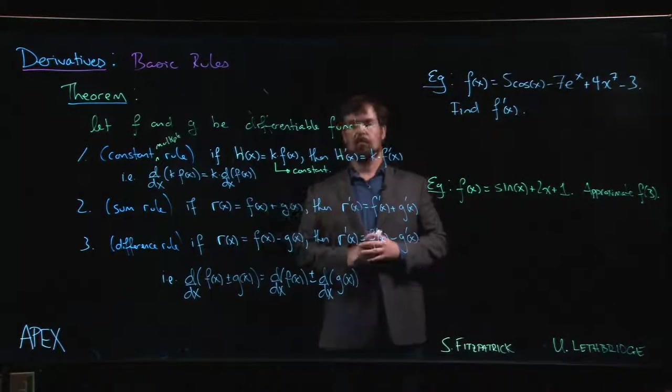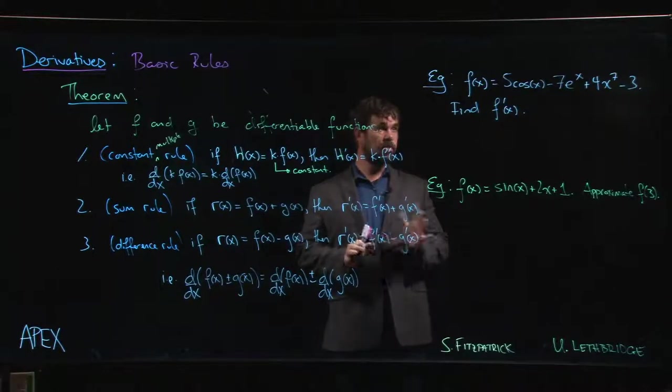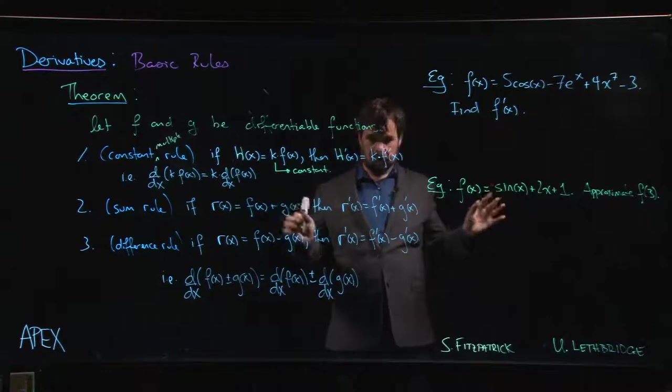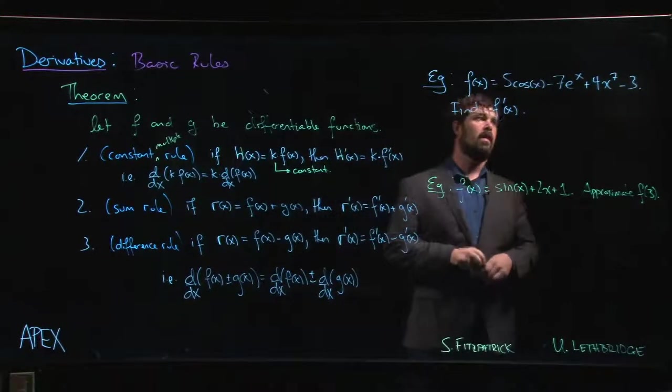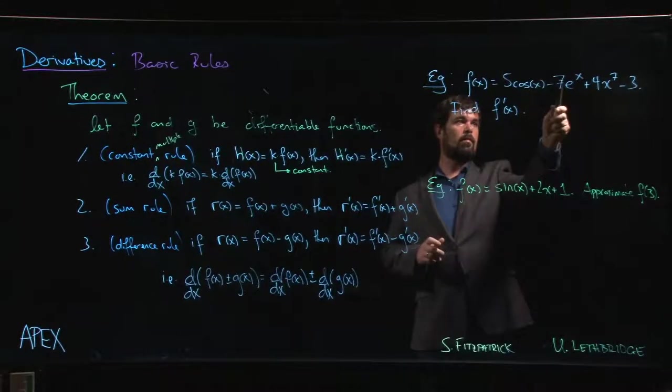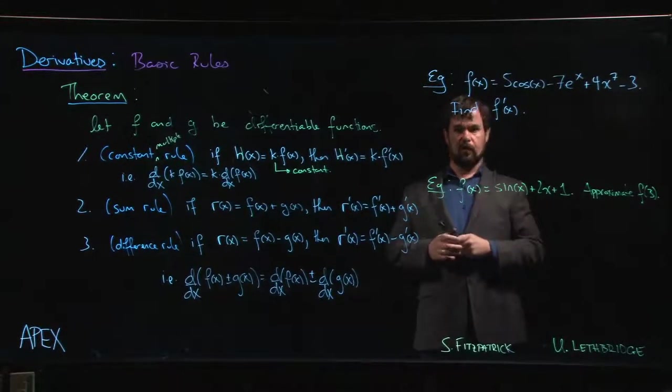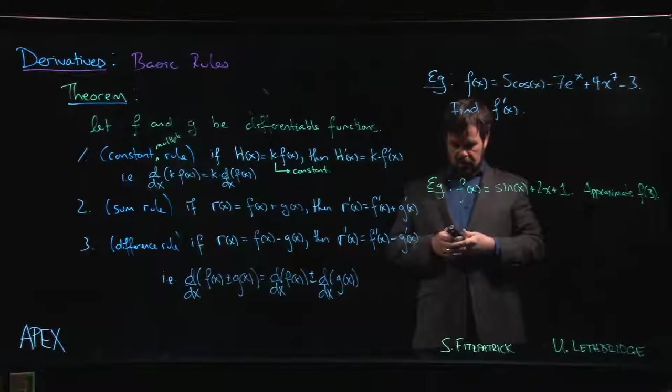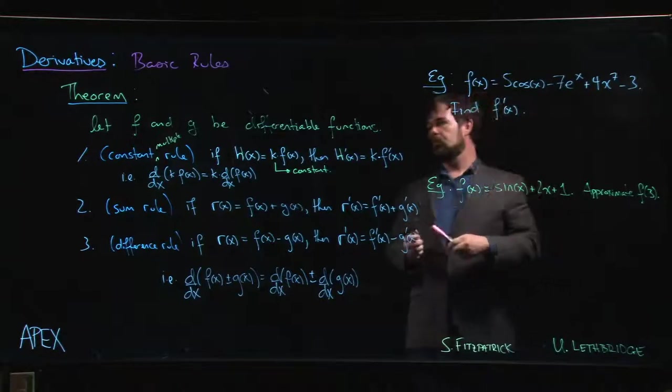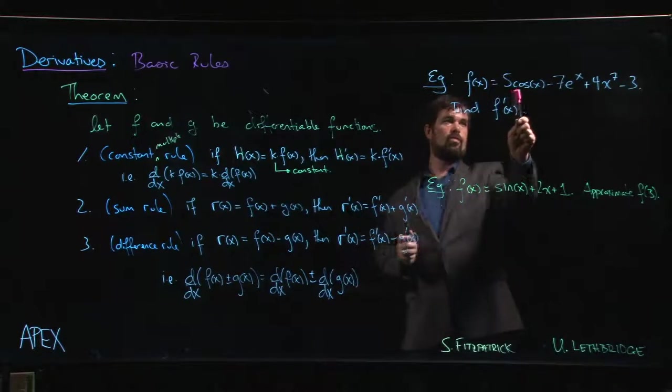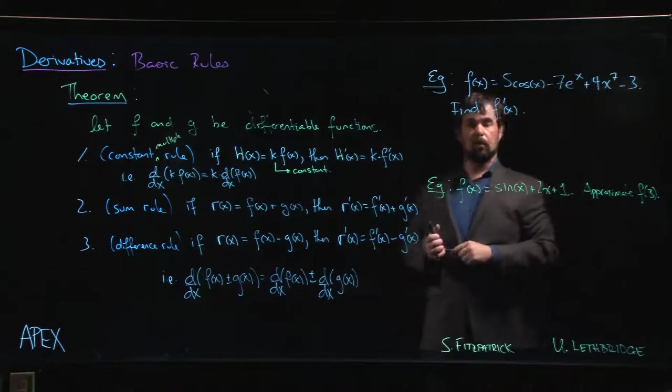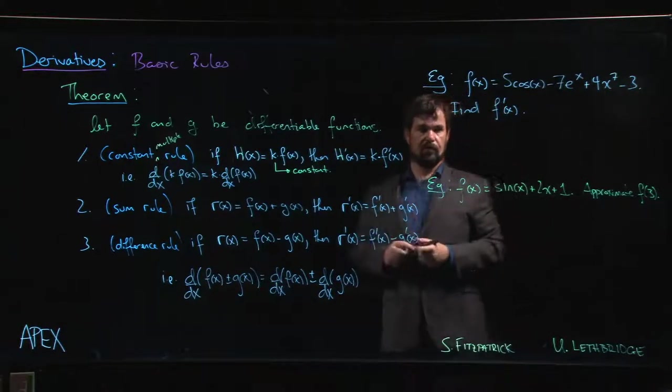Let's put these three rules we have here to use in a couple of examples. So the first one just asks for the derivative, nothing more. What we have here is a function which is sum of four terms: we have a cosine term, an exponential term, there's a power function, there's a constant. So the first thing to realize is that when you're finding f prime, what these rules are really telling you is that you should do the derivative term by term and the constant multiples are more or less placeholders, they stay put.